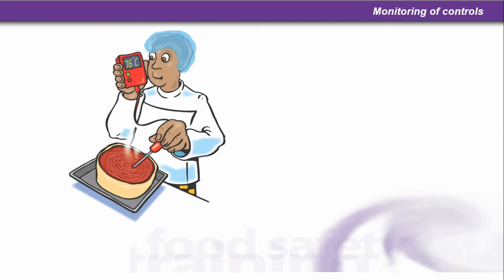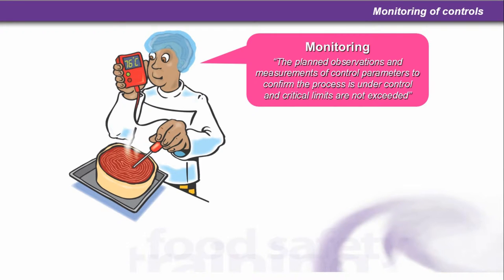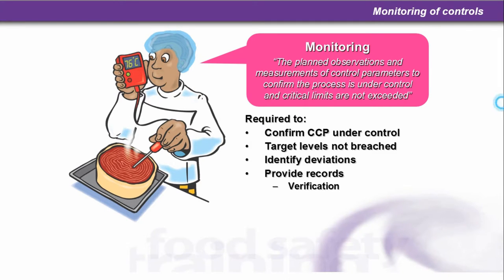So, monitoring of controls. Monitoring — the definition — is the planned observations and measurements of control parameters to confirm the process is under control and critical limits are not exceeded. It is required to confirm the CCP is under control and target levels are not breached.